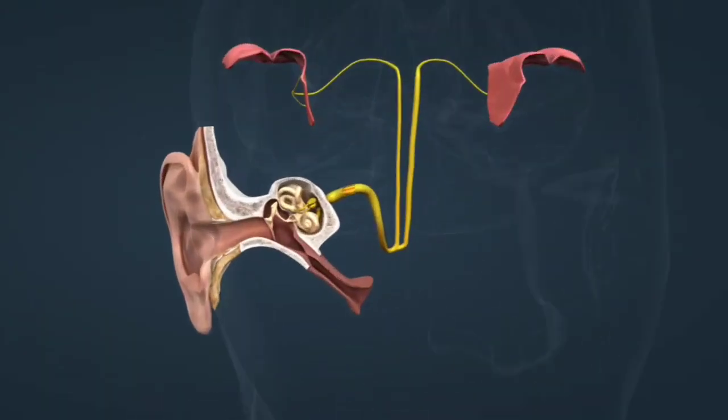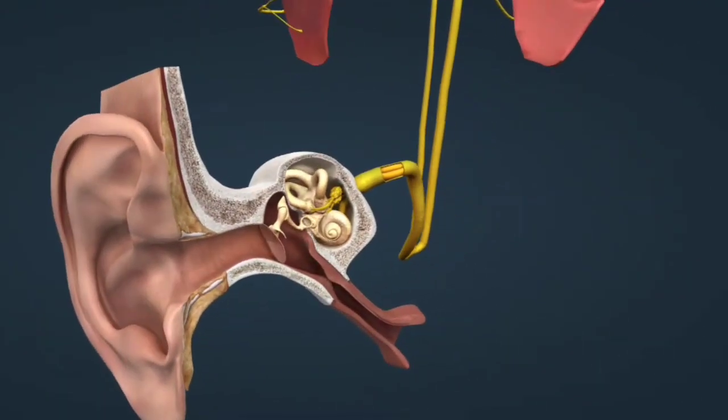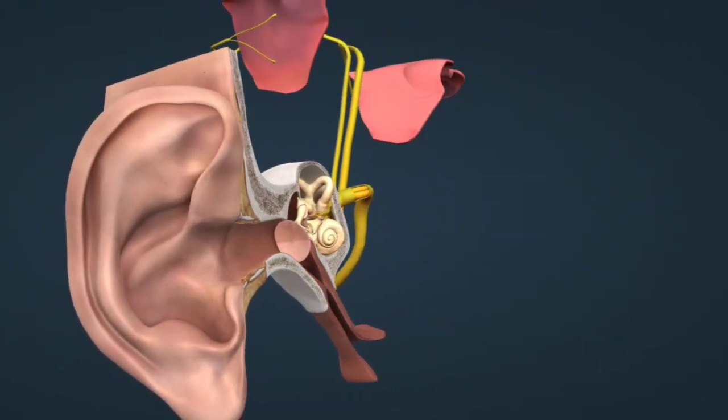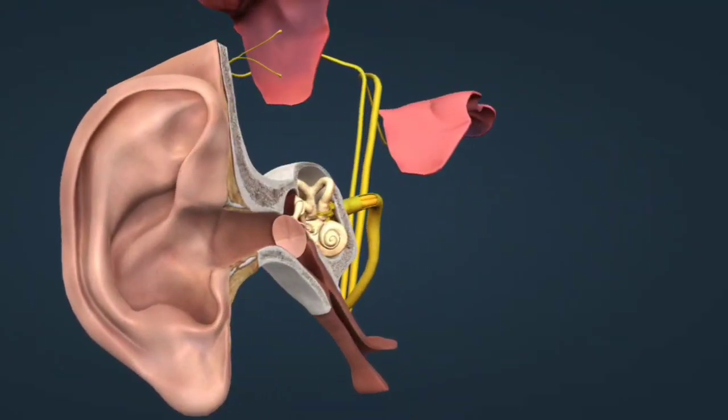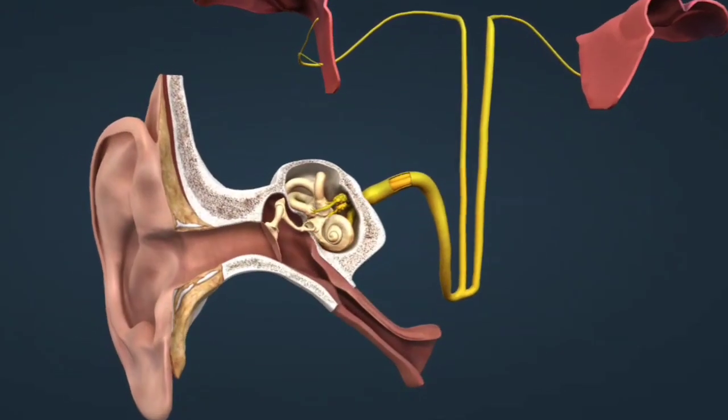One, outer ear: collecting sound. Pinna (auricle) captures sound waves from the environment and directs them into the ear canal. Ear canal amplifies the sound and channels it to the eardrum.